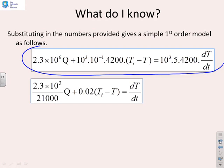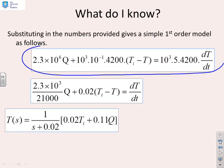If I simplify that out it comes out to something like this, and simplify it again - this is the model we end up with. The temperature of the output flow is 1/(s+0.02) times [0.02Ti plus 0.11q] where q is the steam flow.